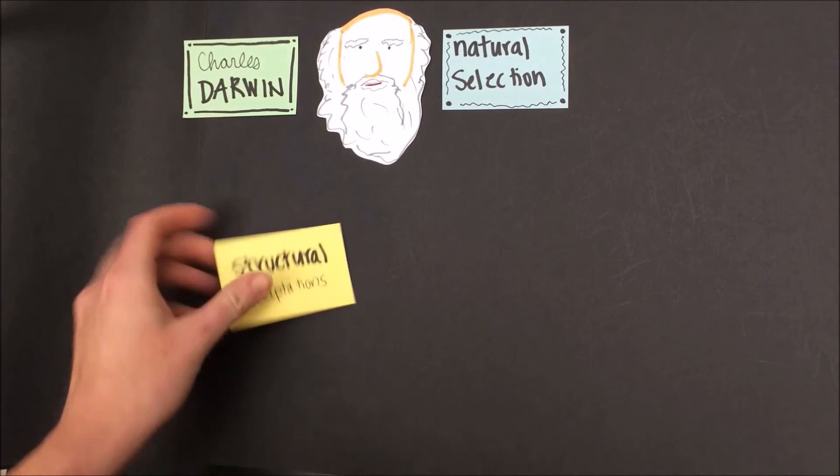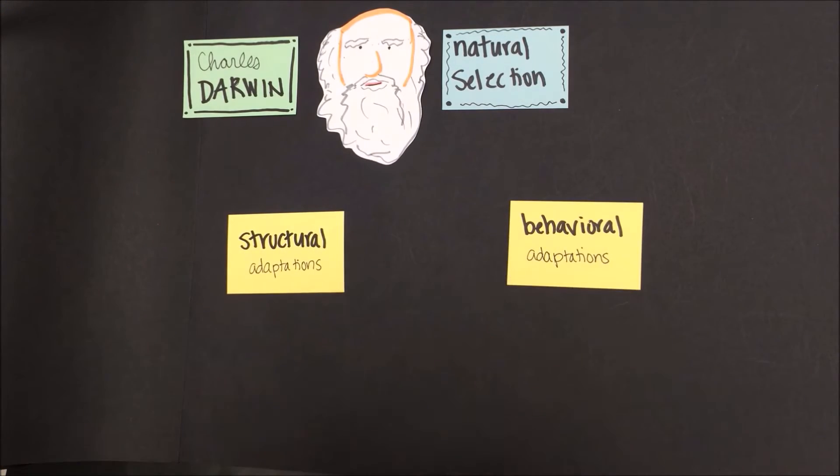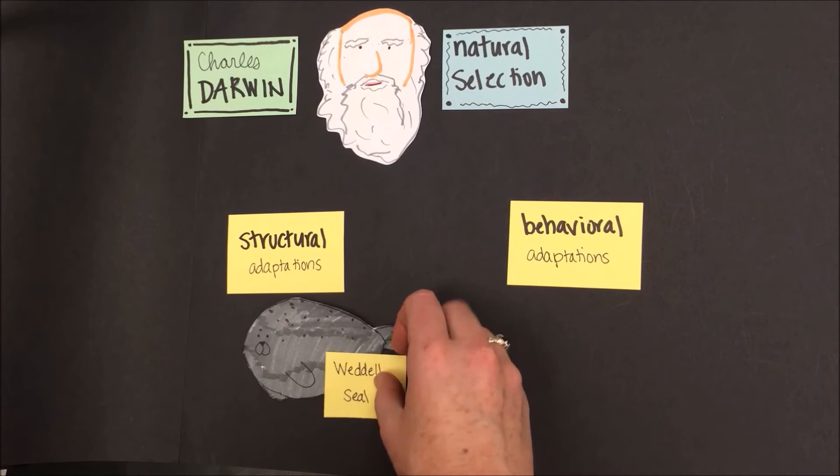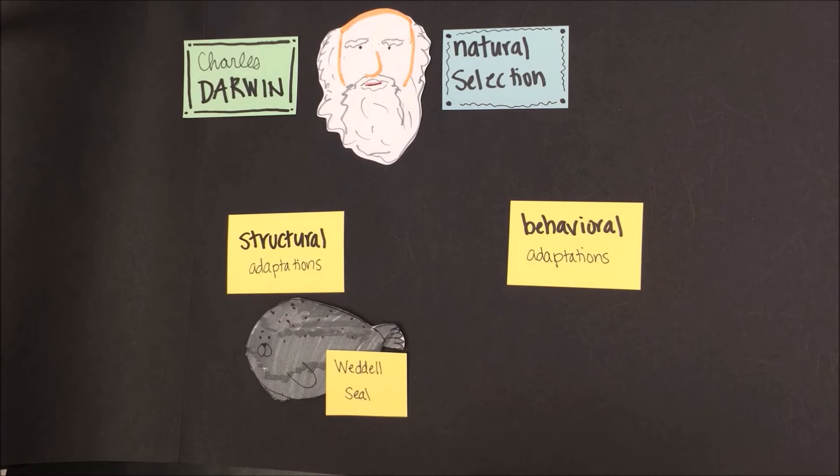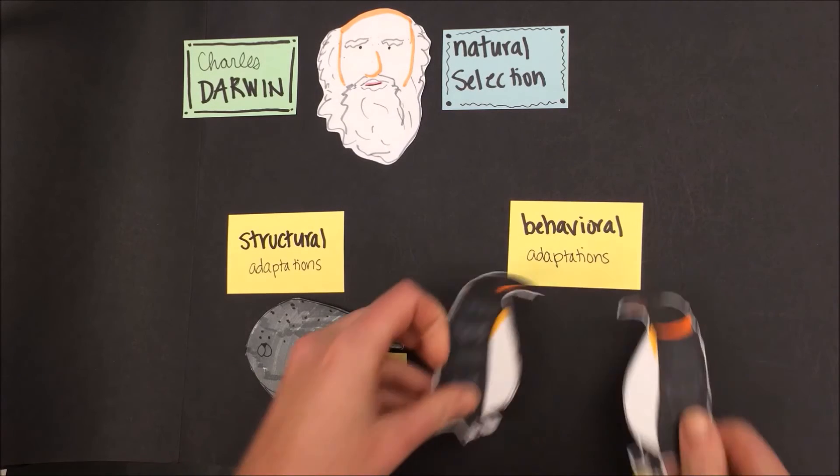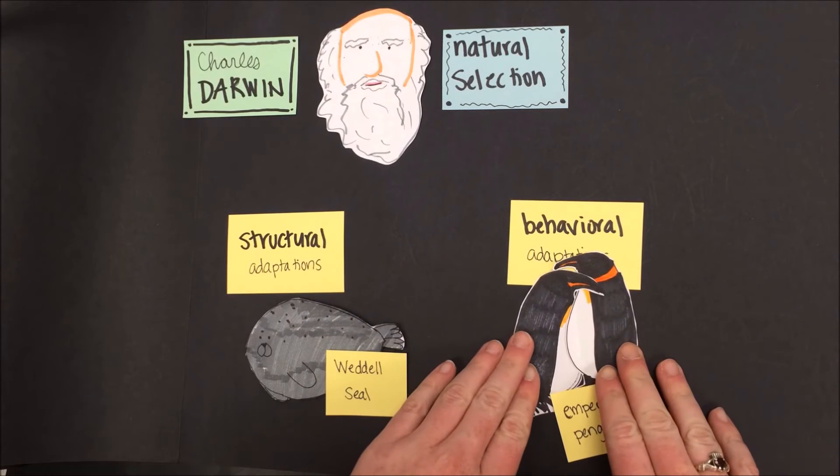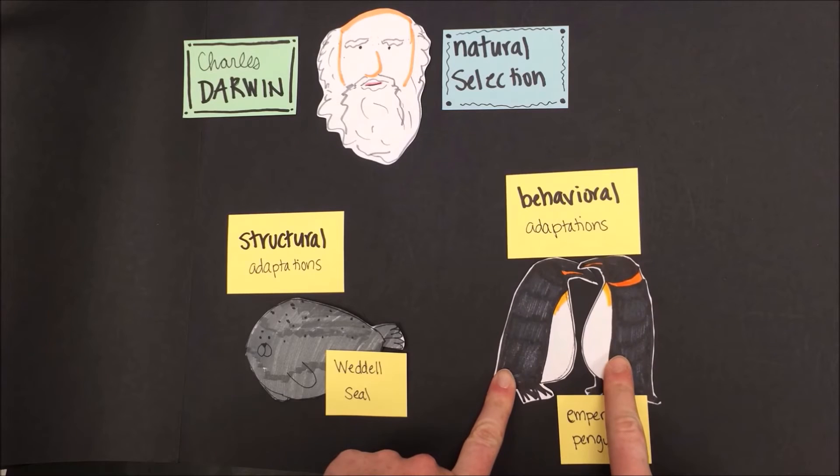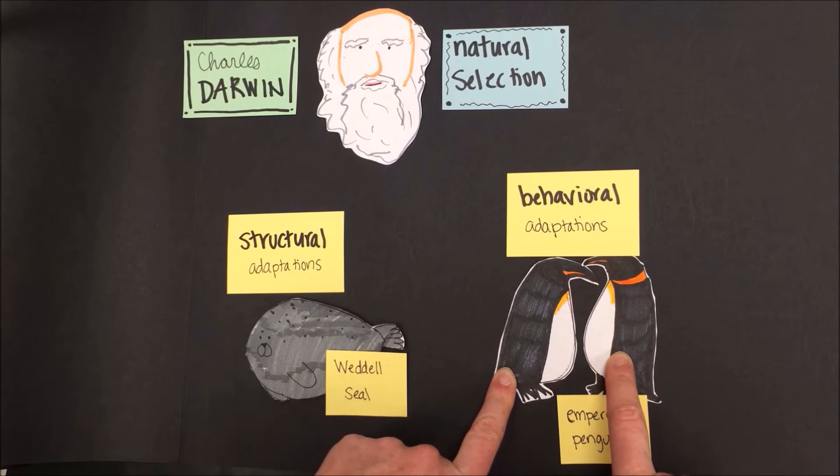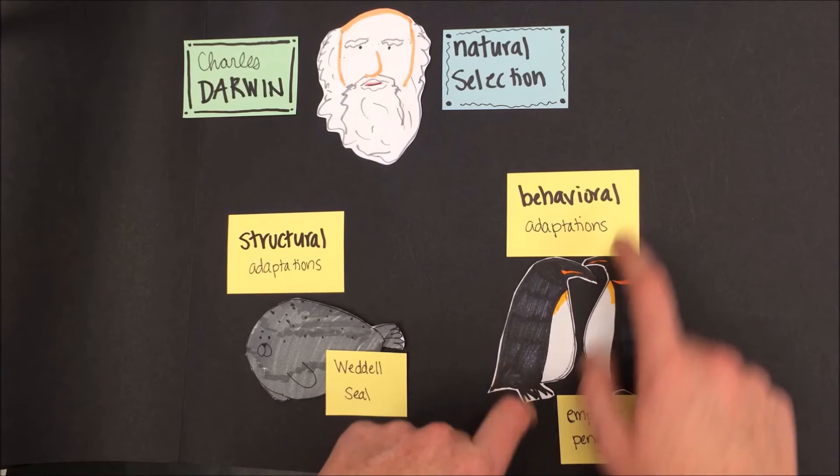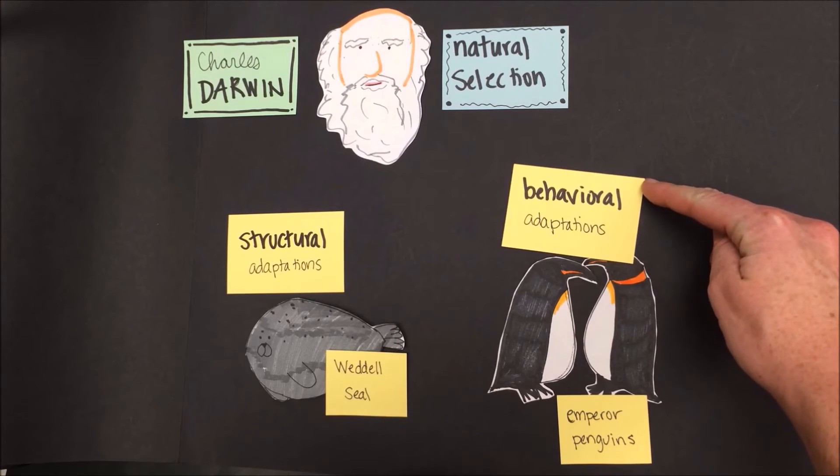Adaptations for the environment can be structural or behavioral. Structural adaptations have to do with body structure or body parts, such as the ample layer of blubber or insulating body fat in the Weddell seal, the world's most southerly mammal. Behavioral adaptations are actions that an organism takes to help it survive. For example, we discussed the way that emperor penguins huddle together when it's cold. They also go on a miles long journey so that they can lay their eggs in a safe place. Because these are behaviors or actions, they're called behavioral adaptations.